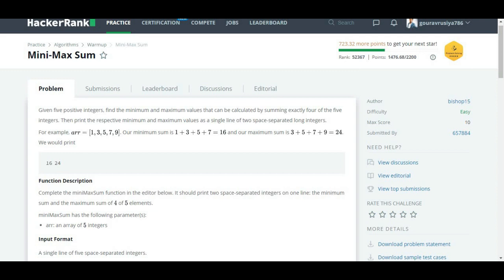Hello friends, welcome again to Codex. My name is Gaurav. The problem that we are going to discuss today is minimax sum. Let's quickly jump to the problem description. It says, given five positive integers, find the minimum and maximum values that can be calculated by summing exactly four of the five integers.